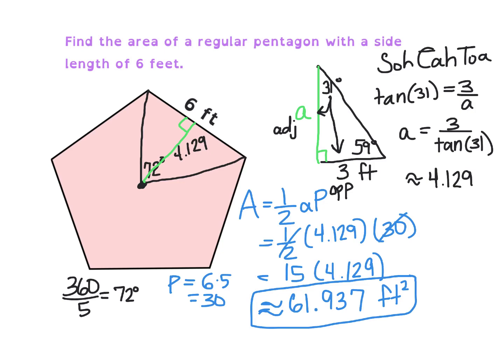I hope that was helpful. If you were to leave this in terms of tangent, remember that the apothem was 3 over tangent of 36 degrees. You would multiply numerators: 15 times 3 is 45. So that's also equivalent to 45 divided by the tangent of 36 degrees. If you plug that into your calculator, you'll get 61.937.